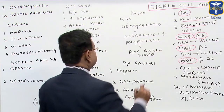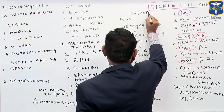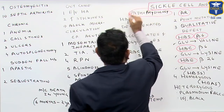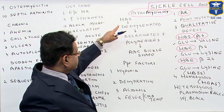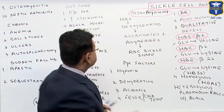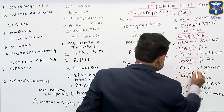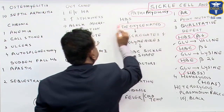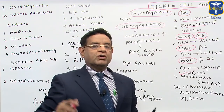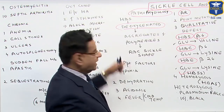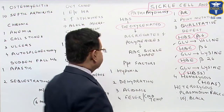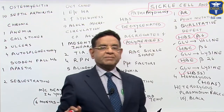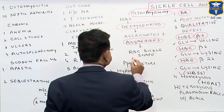Now, what is the pathophysiology? In homozygous sickle cell (HbSS), under any condition leading to hypoxia or when hemoglobin is deoxygenated, the hemoglobin molecules get aggregated and polymerize. Once the hemoglobin has been polymerized, the RBC assumes a sickle shape.